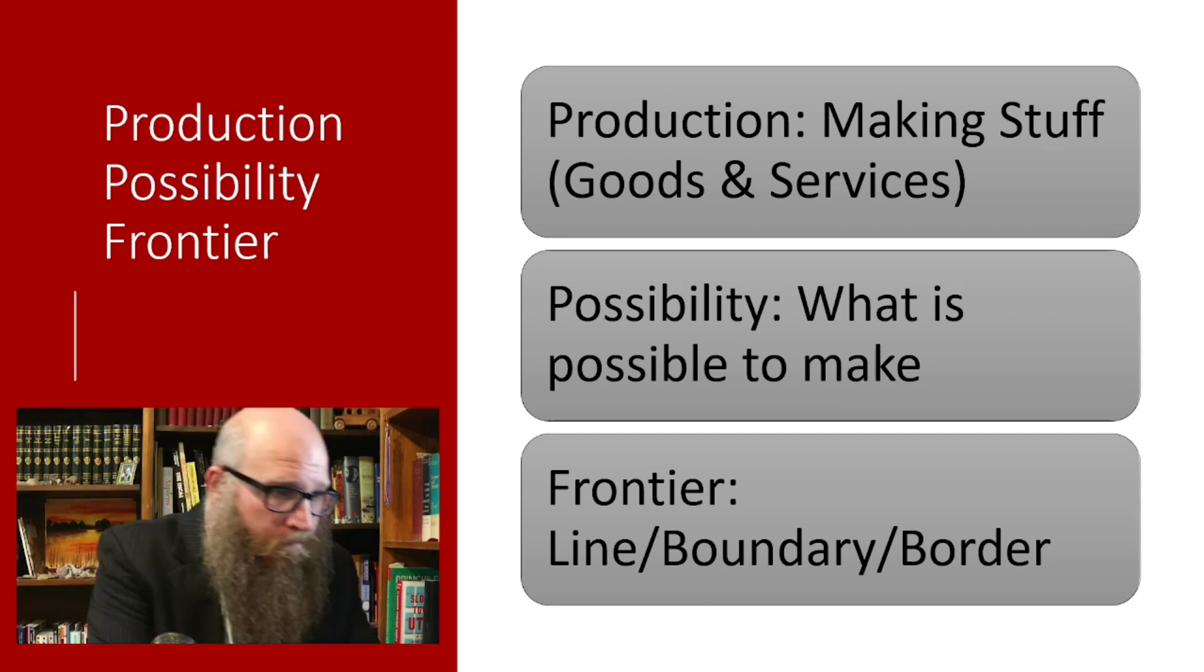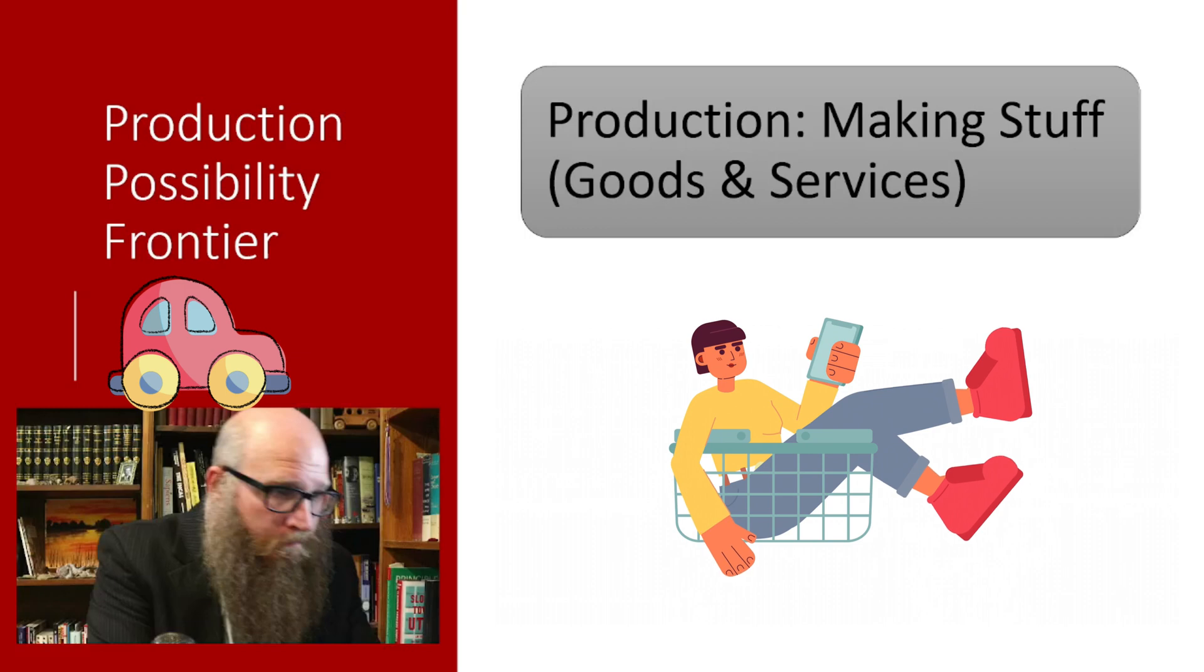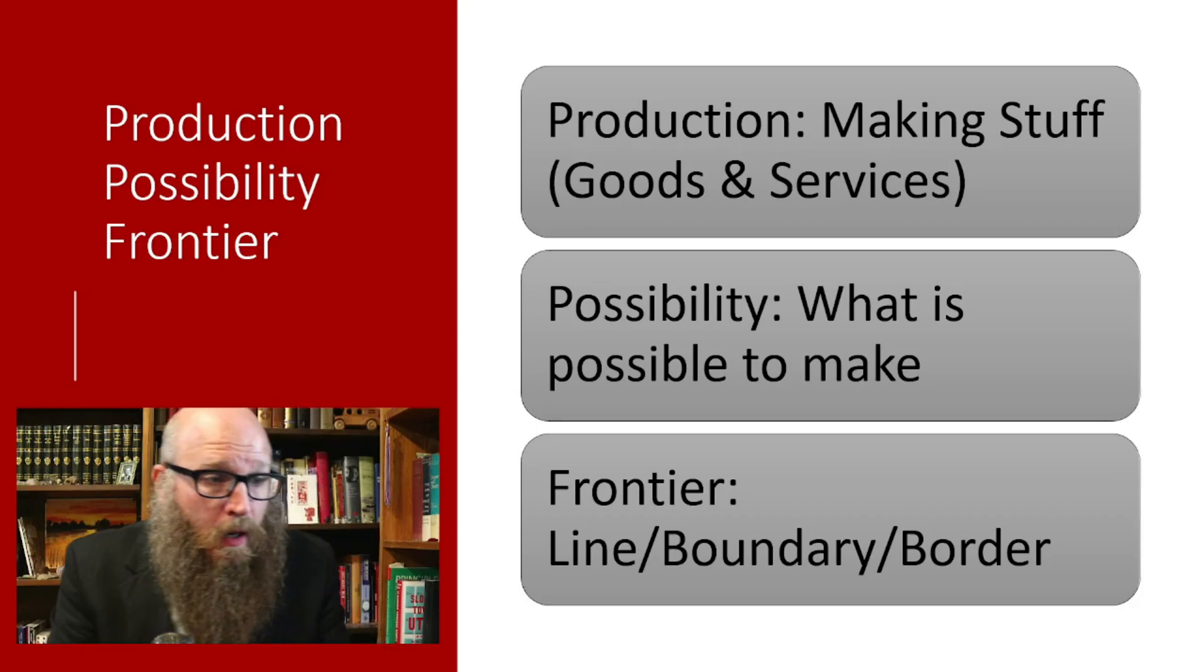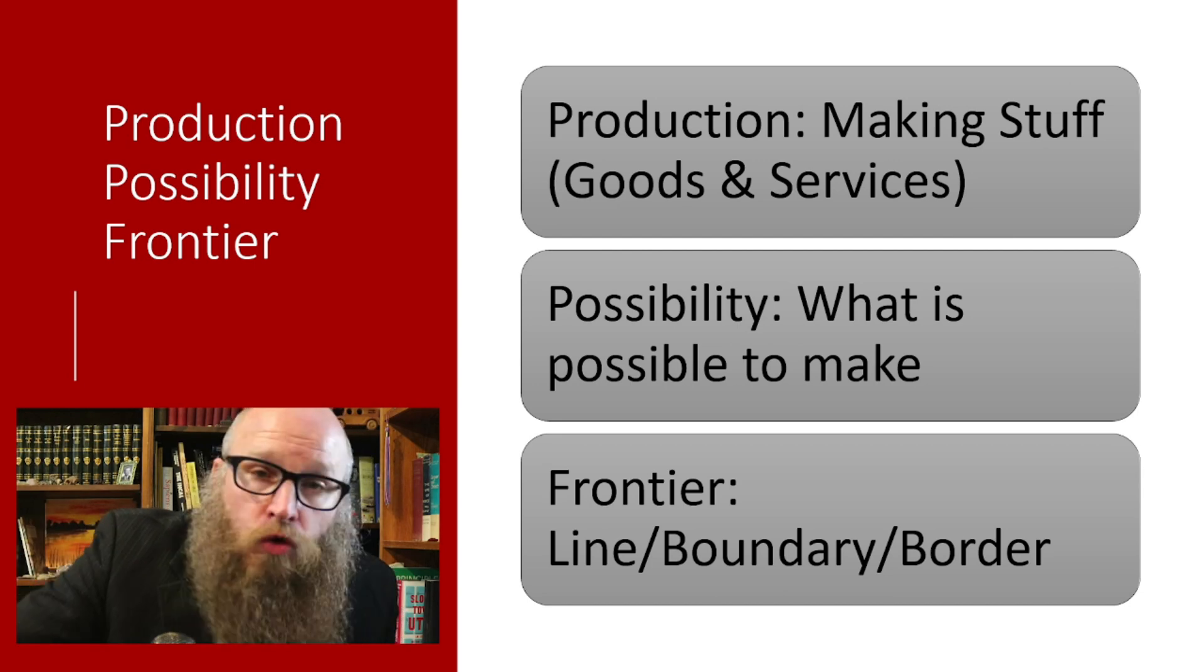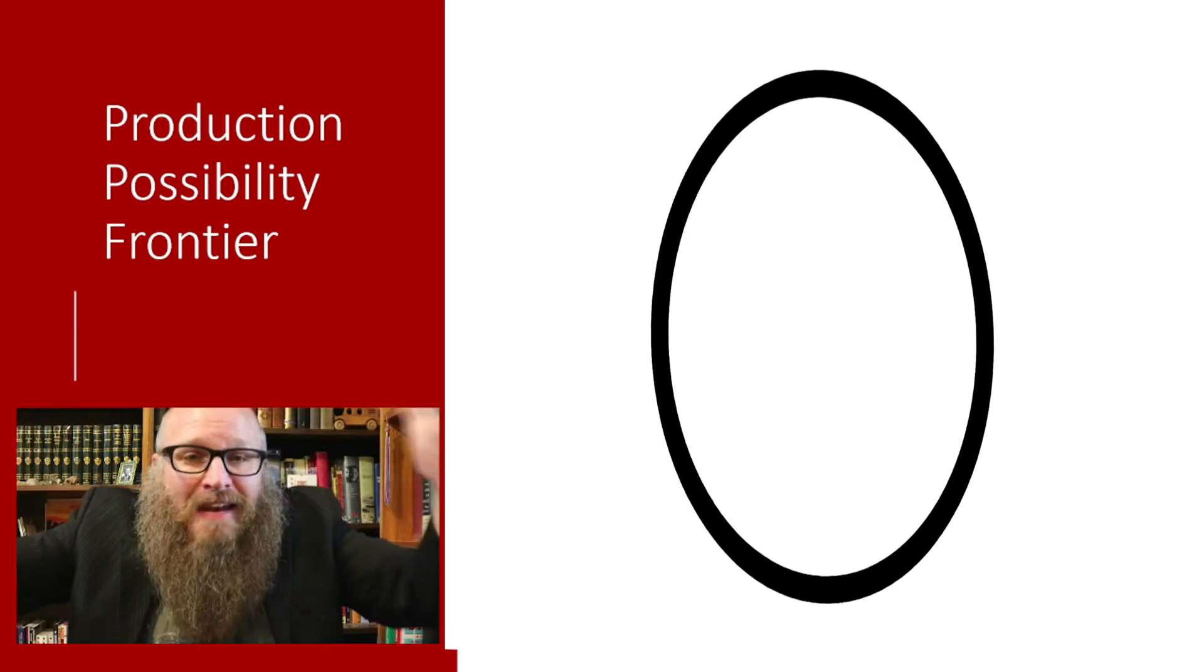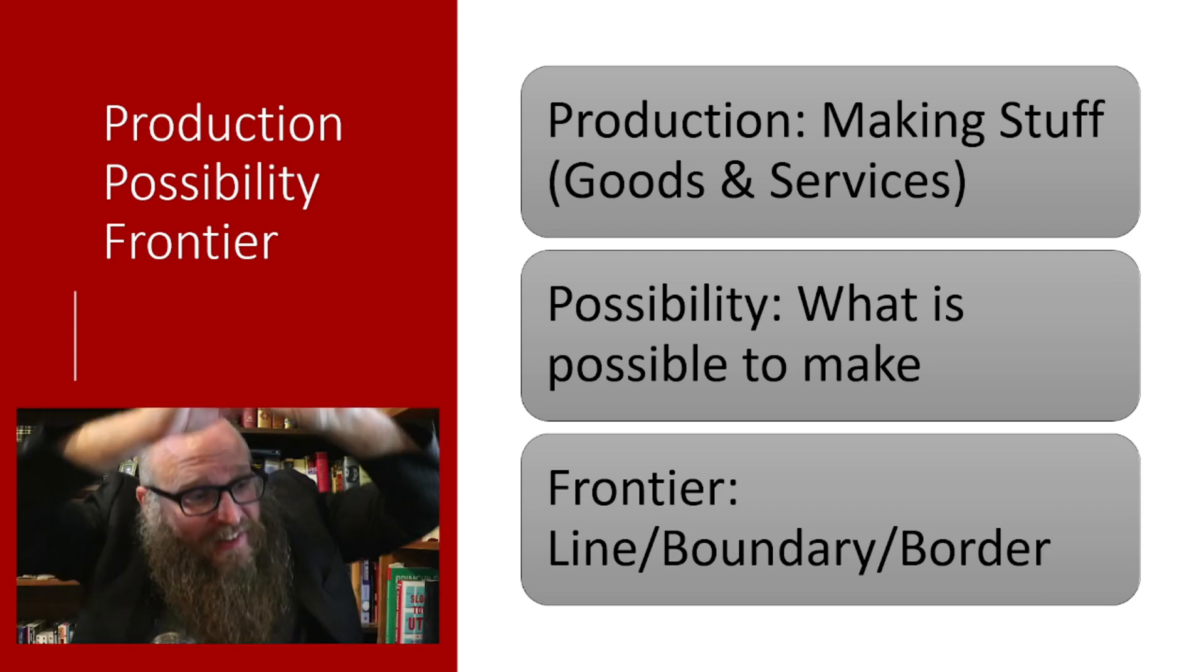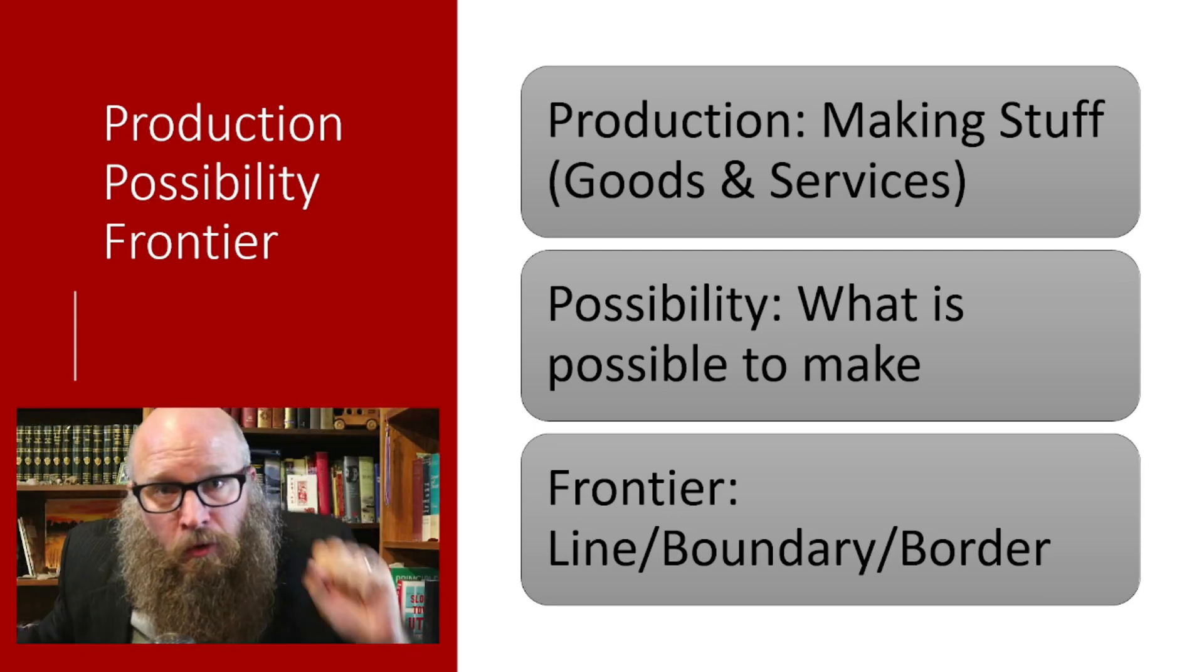Production is a word we all know. It just means making stuff like goods and services. Possibility is what is possible. And the word frontier just means line or boundary or a border. So the production possibility frontier simply tells us what is it possible for us to produce. Remember, we can't produce infinite things. We have to make a choice. We have to make a trade-off. This is the whole set of possible trade-offs.